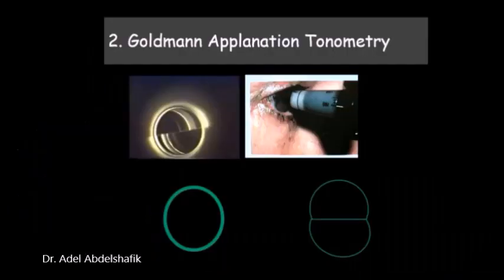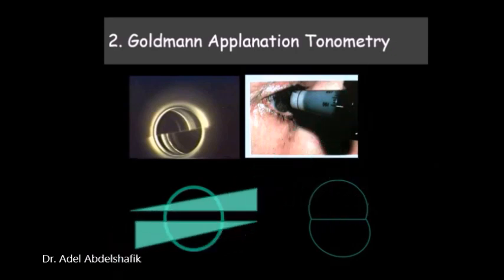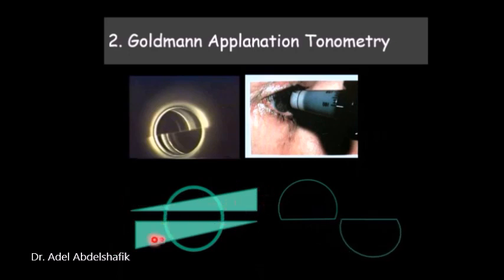Goldmann applanation tonometry. In Goldmann applanation tonometry, two prisms are located in the tip of the cone. They are arranged in such a way that one of the prisms will shift the image in one direction and the other in the opposite direction. So we have two prisms base out opposite each other.